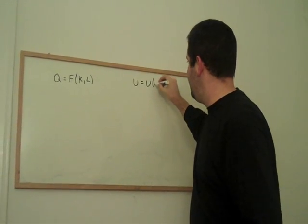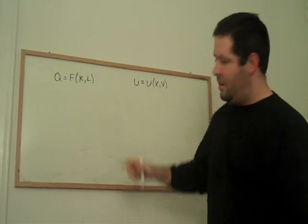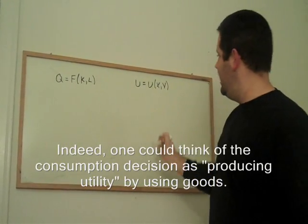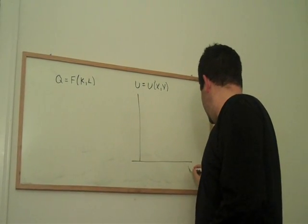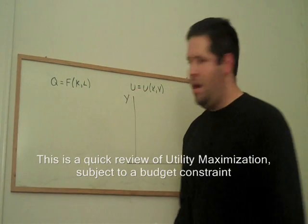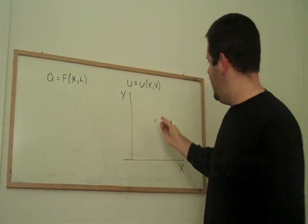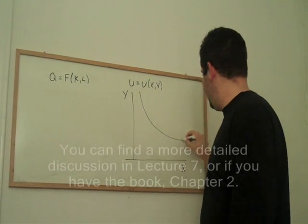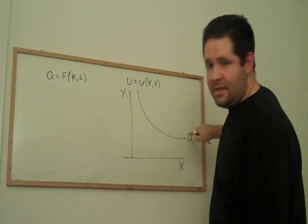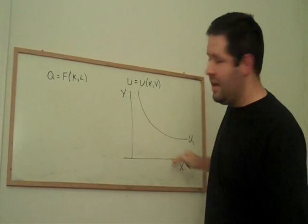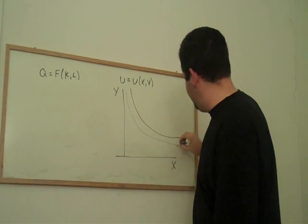This utility is a function of X and Y. And the way we dealt with a problem dealing with this is we graphed the inputs, X and Y, on the horizontal and vertical axis, and we talked about indifference curves. That is, points in this plane of X and Y that give this individual the same utility. Every point has an indifference curve.